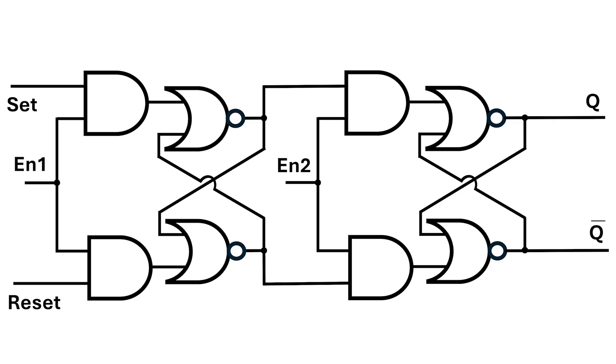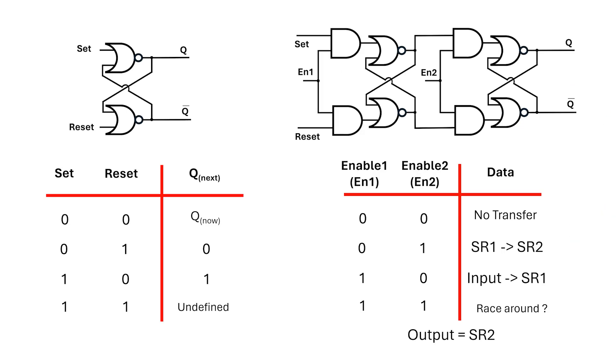In the last video, we went over the SR flip-flop, and I'll just revise it here briefly. We have four inputs: set, reset, and the two enable signals, as well as two outputs, Q and Q-bar.